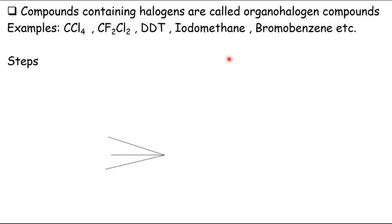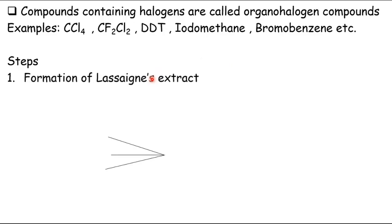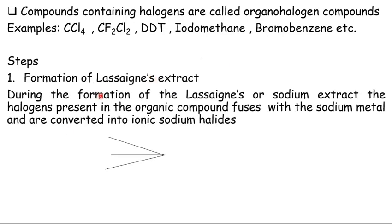We will start with the formation of Lassaigne's extract, which we also call sodium extract. During the formation of Lassaigne's extract, we convert the halogen present in organic compounds. If we have an organic compound containing chlorine, bromine, or iodine, these are fused with sodium.